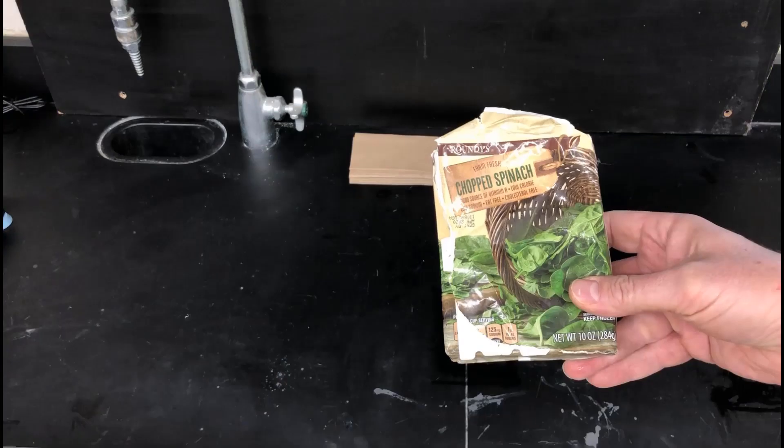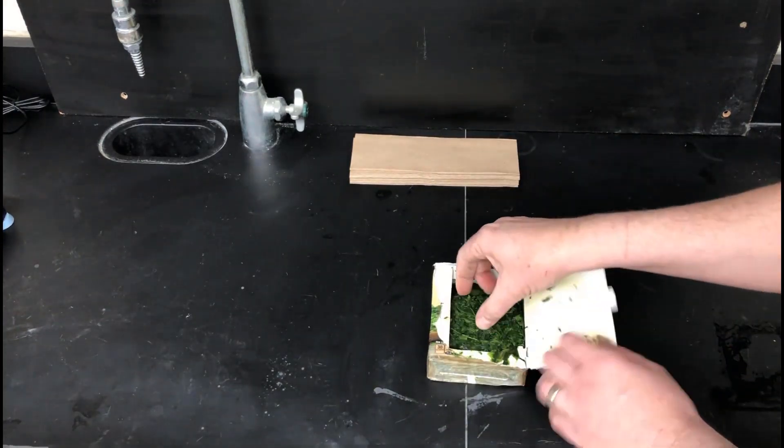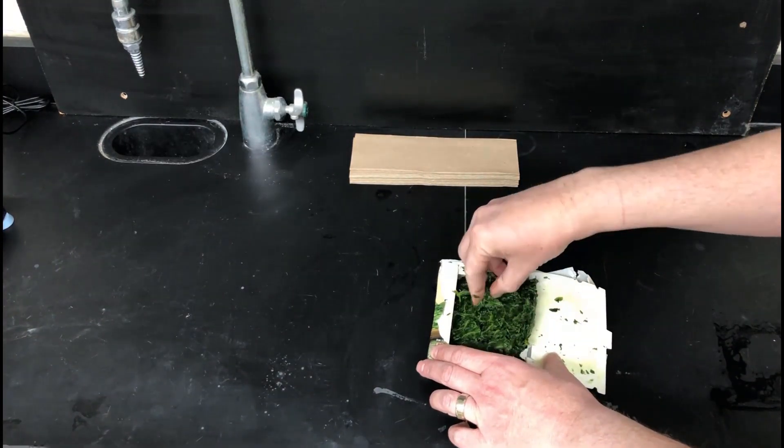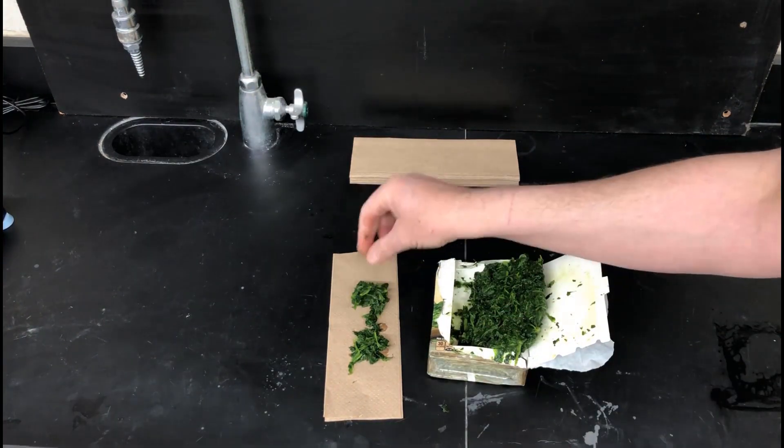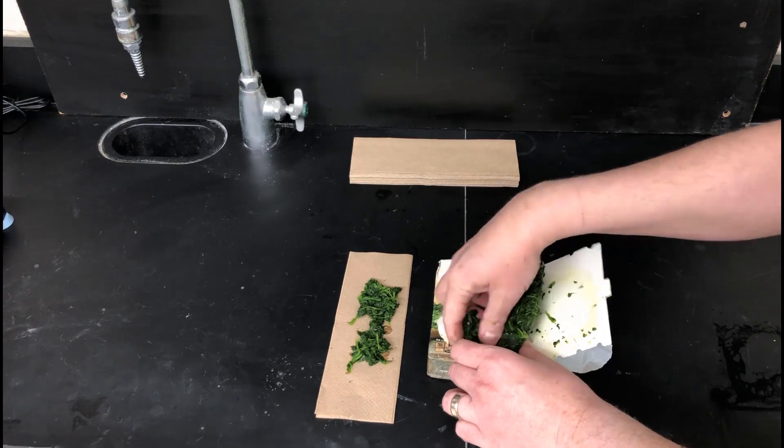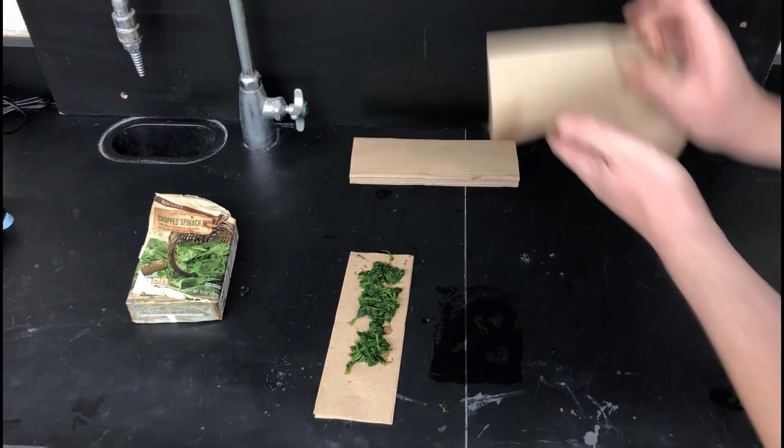So you're going to get some frozen spinach here. This is standard stuff from the grocery store. You'll need to thaw it first, but then just grab some tufts of it and put it on some paper towels.